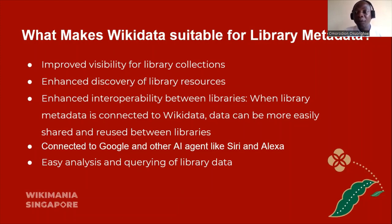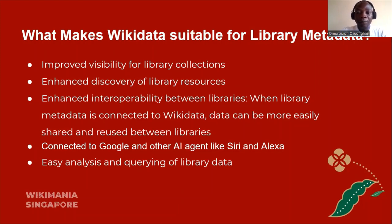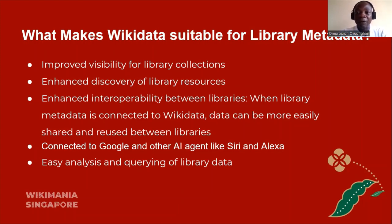With Wikidata technology, we can foster cooperative cataloging among libraries and libraries could engage in cooperation and update their records together. This will help improve the standardization of bibliographic materials and help create better, higher quality metadata for libraries. It will also help libraries that don't have enough skilled staff to create their own bibliographic records, so they can work with existing metadata. Wikidata is also highly visible and connected to Google and other AI agents that help in the area of search and retrieval of information from the library.